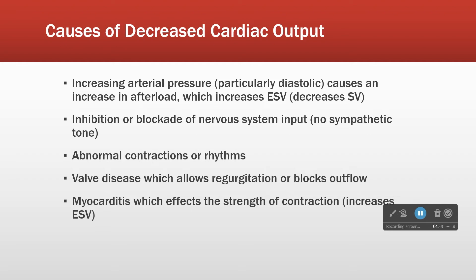Myocarditis: the heart is a muscle, and like all muscle, it can get sick — the muscle cells themselves may not be able to contract with their usual force. There are numerous causes of myocarditis: infectious, autoimmune, congenital — but all decrease the strength of contraction, increasing ESV and reducing cardiac output. Myocarditis, valve disease, and abnormal contractions are disease states. Reduction in nervous system input and changes in arterial pressure are part of normal physiology and can decrease cardiac output even in the healthy.